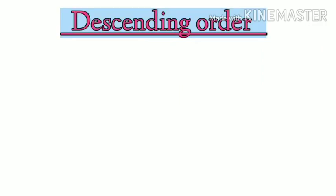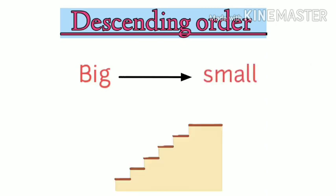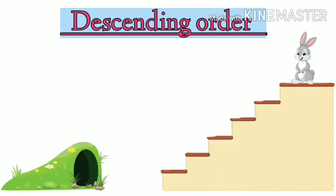Next we will do descending order. Descending means, yes, bigger to smaller, big number to small number. As you can see it on the screen. Let's do the first number.